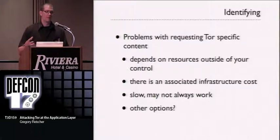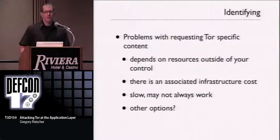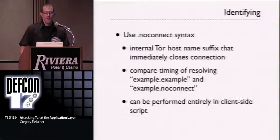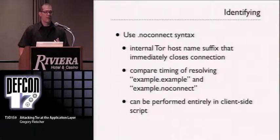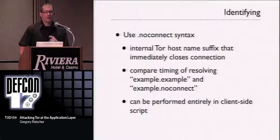There are significant problems with this approach: speed — these requests are slow, especially for hidden services — and you're depending on resources outside of your control. There's another internal special syntax Tor uses called .noConnect. You can use this to test the speed at which you resolve DNS names ending in .noConnect. It's essentially a no-op: as soon as you request an address ending in .noConnect, Tor immediately closes it. Since even local DNS resolver lookups take more time than Tor closing a socket, you can use these timing discrepancies to identify if someone is using Tor — entirely client-side in JavaScript.